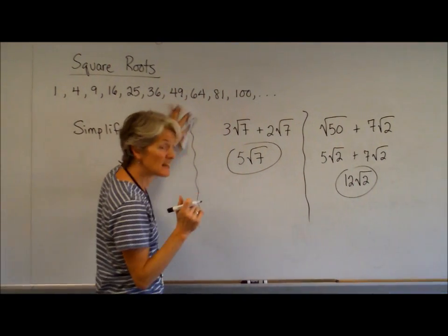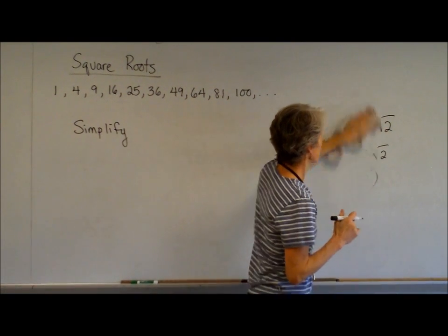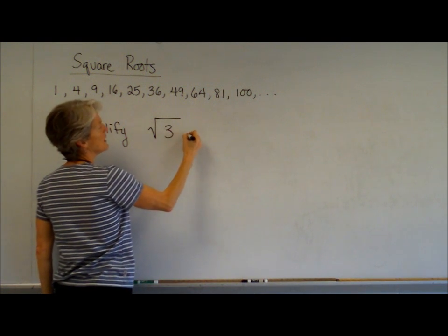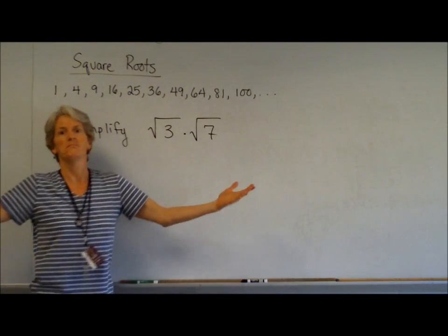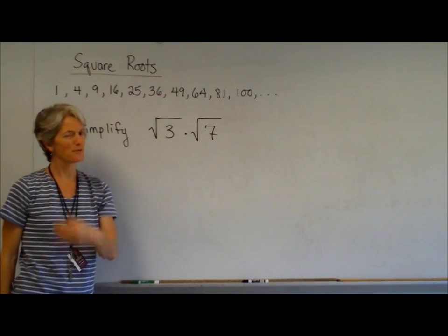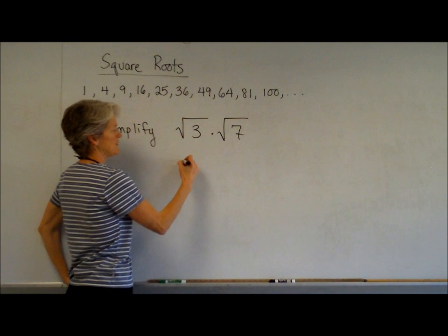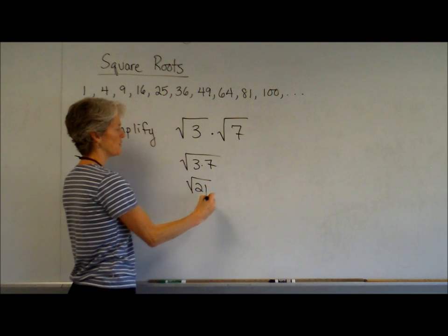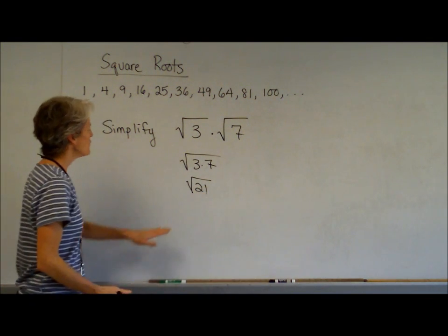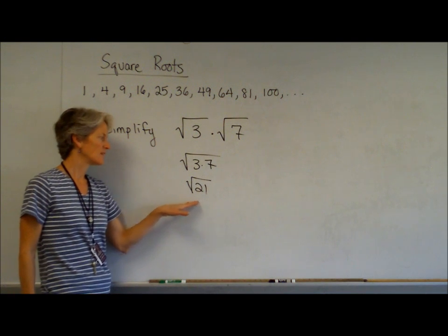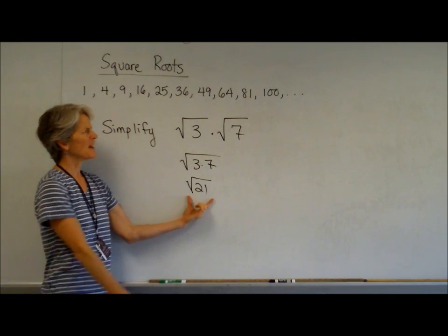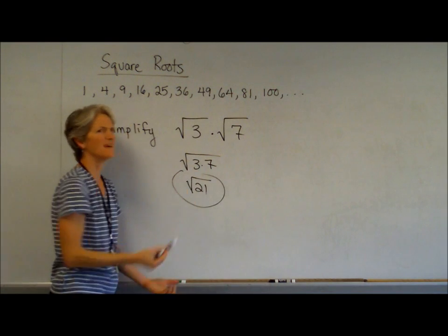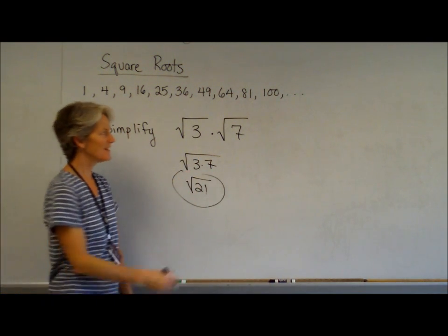Let's move on to multiplying and dividing. Multiplying and dividing, most people find it a little easier. For example, if I want to multiply the square root of 3 times the square root of 7, isn't that just the square root of 3 times 7? And isn't that just the square root of 21? Whenever you do this, you want to look at your answer and make sure it's in simplest form. Is there any perfect square that is a factor of 21? So I'm done.